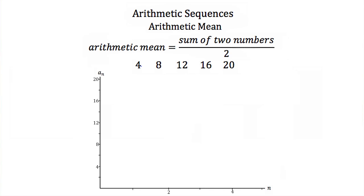I can plot these different terms in our sequence on this graph. Here we have the value of our term, a_n on the y-axis, and the number of the term, or the position, n on the x-axis. Our first term is 4, so we go to 1 on the x and up to 4 on the y. Our second term is 8, so we go from 2 up to 8 on the y. Our third term is 12, so 3 up to 12. Our fourth term is 16, so 4 on the x and 16 on the y. And our fifth term is 20. Notice that these create a linear graph, or a straight line, meaning that every point on our sequence will be on this line.